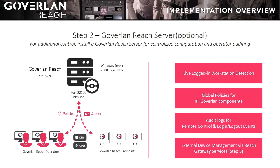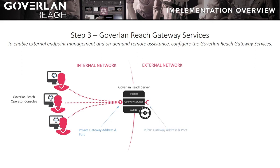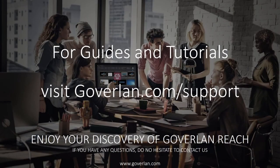Let's take a look at how this service can be configured. After your Goverland Reach Server has been implemented and advertised internally, you will need to configure a private internal facing network address and port that will be used by your Goverland Consoles. Then, a public external network facing DNS or IP address and port that will be used by all incoming external connections. This implementation will provide you with the ability to start off-network on-demand sessions, unattended access to off-network or internal devices that roam off-site, and unattended external site management.